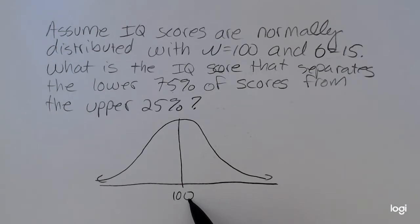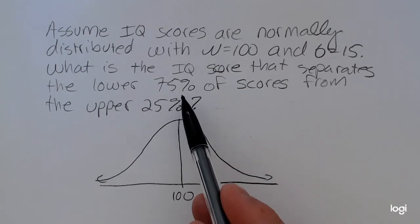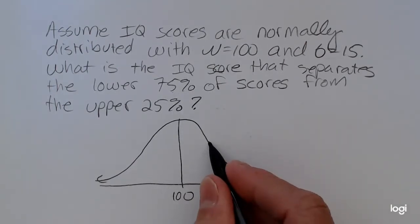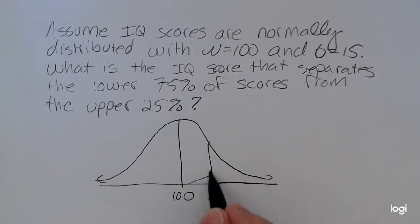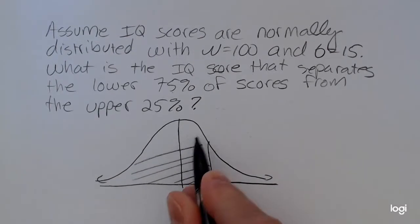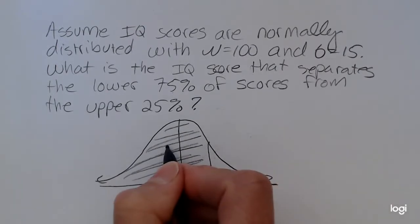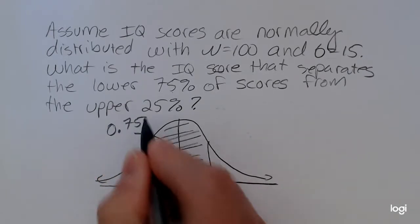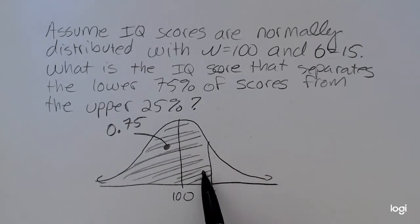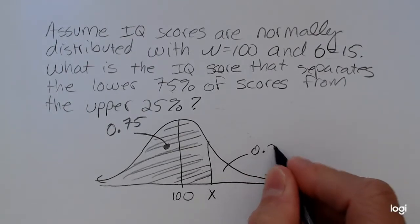In other words, the mean is the 50th percentile. So I want 75% of the area shaded below this mystery value. So I know that's going to be above the mean. So here's what I'm given. I'm given that this area, or this probability, this cumulative probability is 0.75. So this unshaded upper tail must be 0.25.